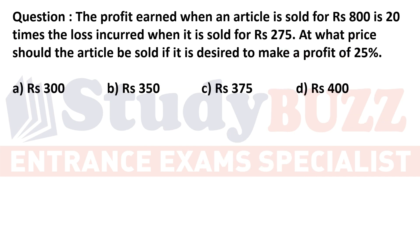Profit and loss question: The profit earned when an article is sold for Rs 800 is 20 times the loss incurred when it is sold for Rs 275. Let the cost price be Rs x.